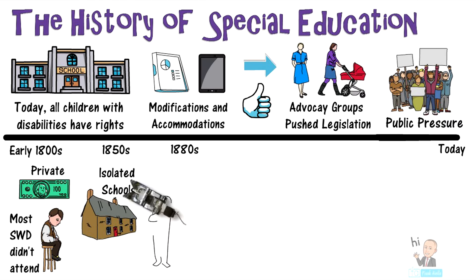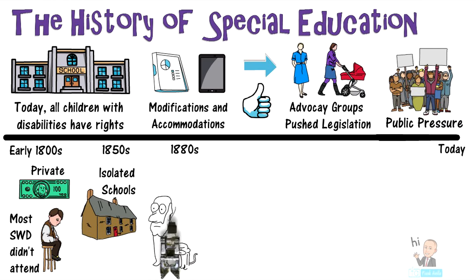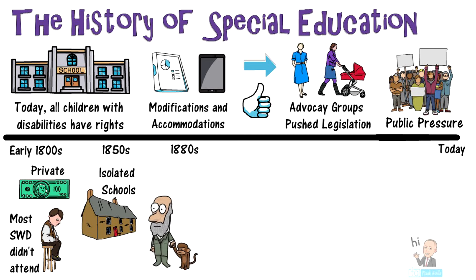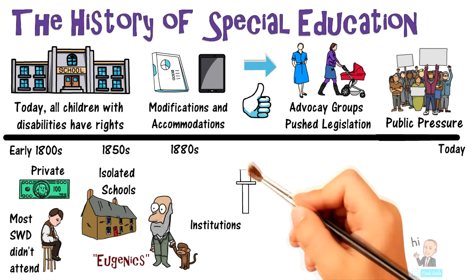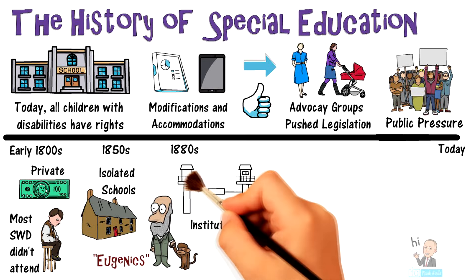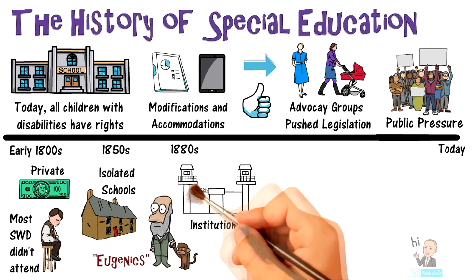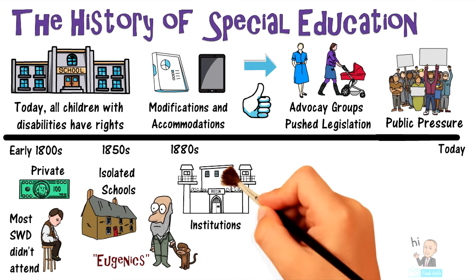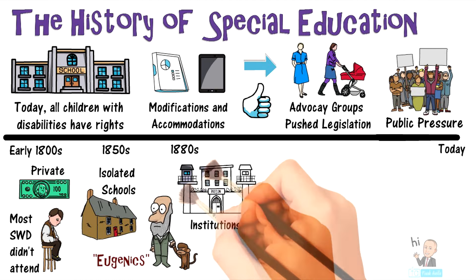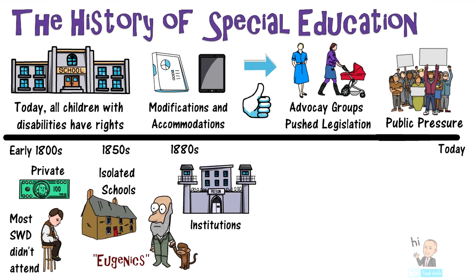Moving toward the 1880s, we sort of took a step back for disabled children. Scientist Francis Galton spread the ideas of eugenics, which discussed the sterilization of disabled individuals. Individuals with disabilities began being placed in institutions, many of which provided conditions similar to a jail.